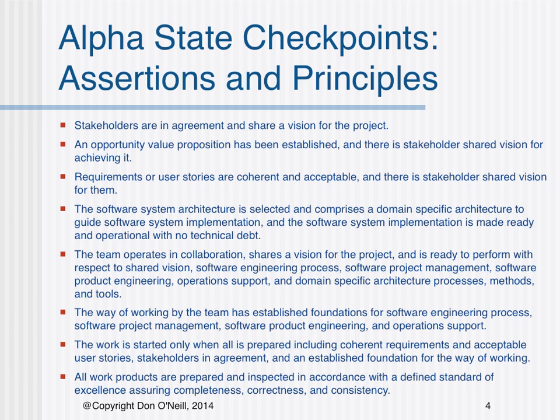Number six, the way of working by the team has established foundations for software engineering process, software project management, software product engineering, and operations support. Number seven, the work is started only when all is prepared, including coherent requirements and acceptable user stories, stakeholders in agreement, and an established foundation for the way of working. Number eight, all work products are prepared and inspected in accordance with a defined standard of excellence, assuring completeness, correctness, and consistency.